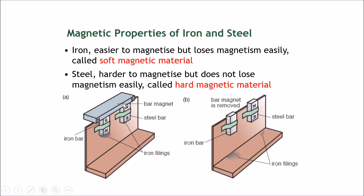With the bar magnet on top, the iron bar is a stronger magnet and the steel bar is a weaker magnet. So why don't we use iron bars for everything? Now let's see what happens when the bar magnet is removed. Looking at the iron bar — there are no iron filings on the bottom because they have all dropped off. The iron bar has lost all its magnetism in an instant. Iron is easier to magnetize and makes a stronger magnet, however it loses its magnetism easily. Once the bar magnet is taken off, it stops being an induced magnet.